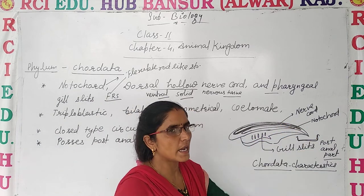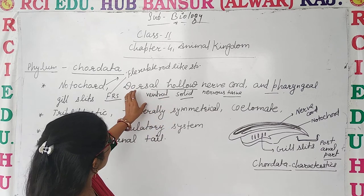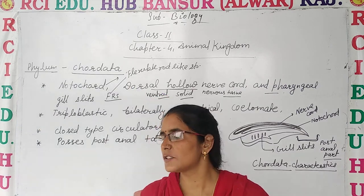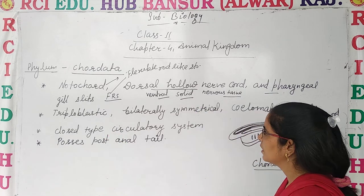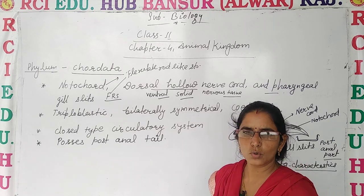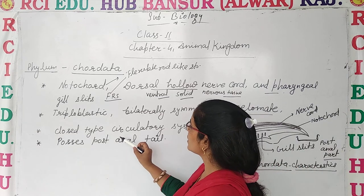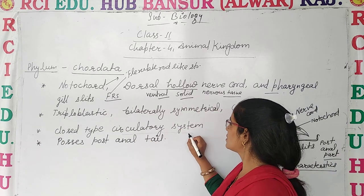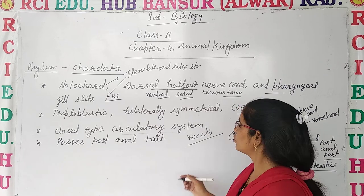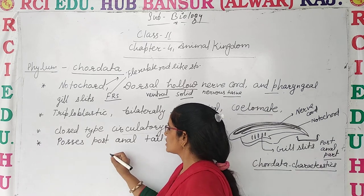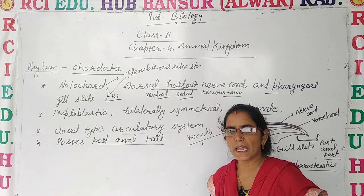Now it is clear that notochord is present, dorsal hollow nerve cord and pharyngeal gill slits — which we have seen in the diagram. The common features also include: triploblastic body with ectoderm, mesoderm and endoderm; bilaterally symmetrical body that can be divided into two equal halves through a single plane; coelomate with true body cavity present; and a closed type circulatory system where blood flows through vessels.